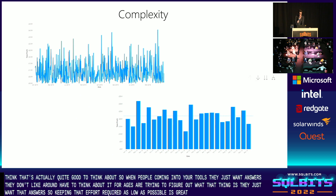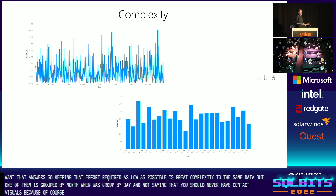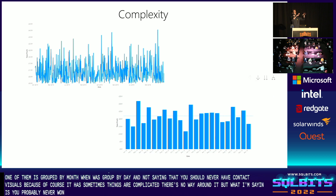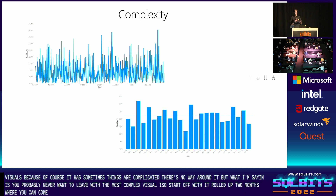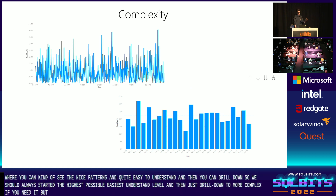The next thing to consider is complexity. These two charts show the same data, but one is grouped by month, one is grouped by day. I'm not saying you should never have complex visuals because sometimes things are complicated — there's no way around it. But you probably never want to lead with the most complex visual. Start off with it rolled up to months where you can see the nice patterns and it's quite easy to understand — and obviously in Power BI you can drill down. We should always start at the highest possible, easiest to understand level, and then drill down to more complex if you need it. But if your question is answered by the first simpler chart, then job done.